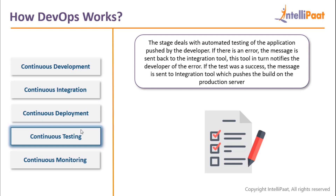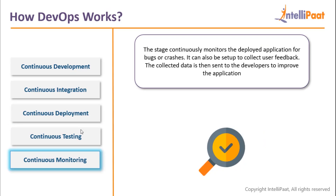Continuous testing is a lifecycle stage where you continuously build and test your code. The code is pulled from the version control system, built into an executable file, and then run. You create automated testing suites which are pre-installed on the testing server. The moment it receives a new executable, all those test suites are executed on it to check if all tests pass. If they pass, it is again picked up by the continuous integration tool and pushed onto the production server.